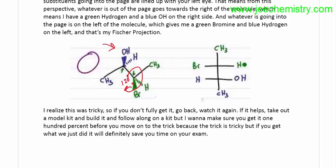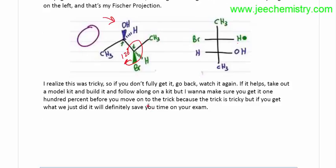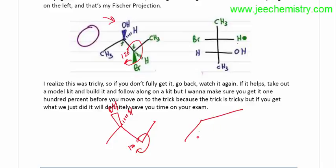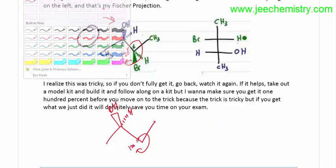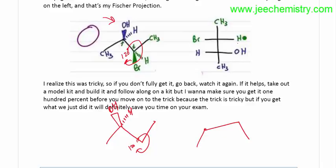If you didn't rotate, then bromine will be on the left side, and OS will be on the right side. If you rotate, the structure will change. If you rotate 120 degrees, this is H, this is OH. After 120-degree rotation, this H will be in the wedge position and bromine will be in the dash position.